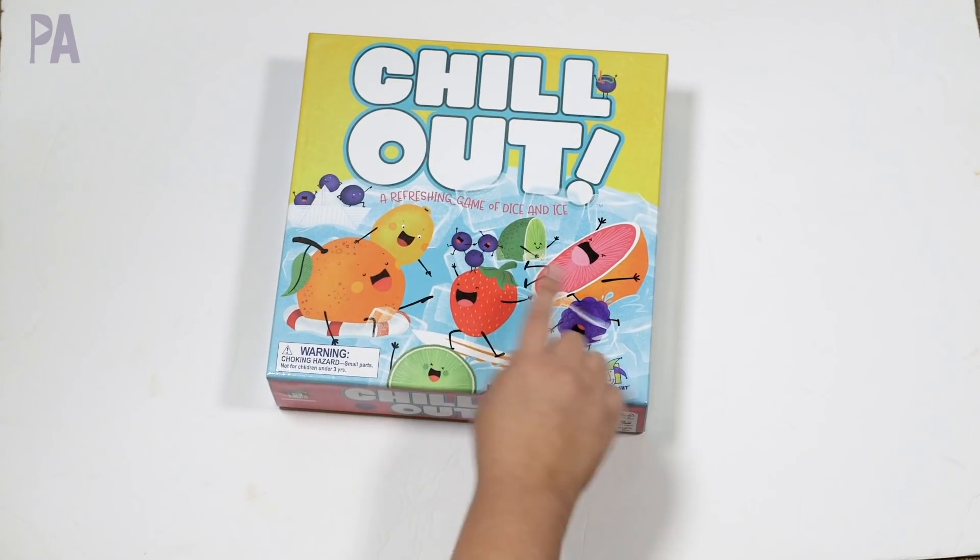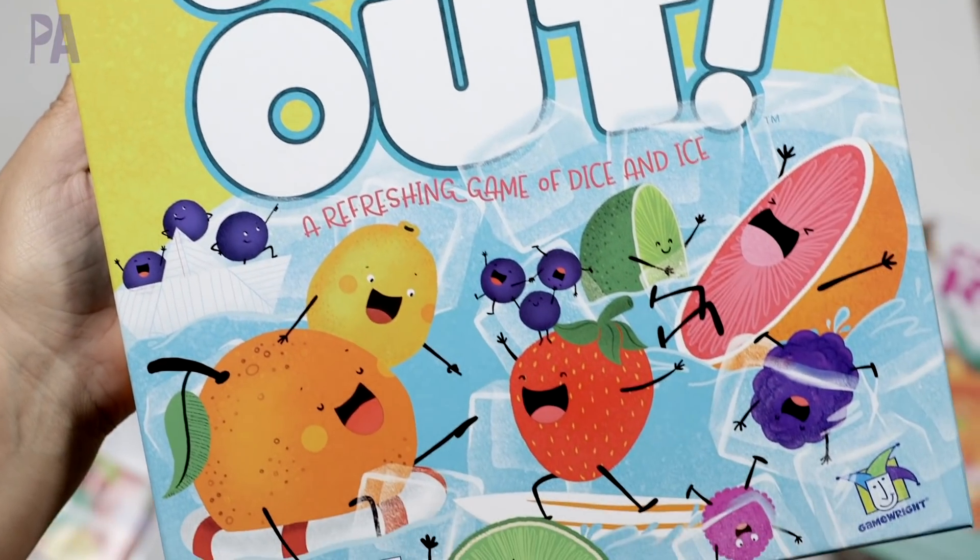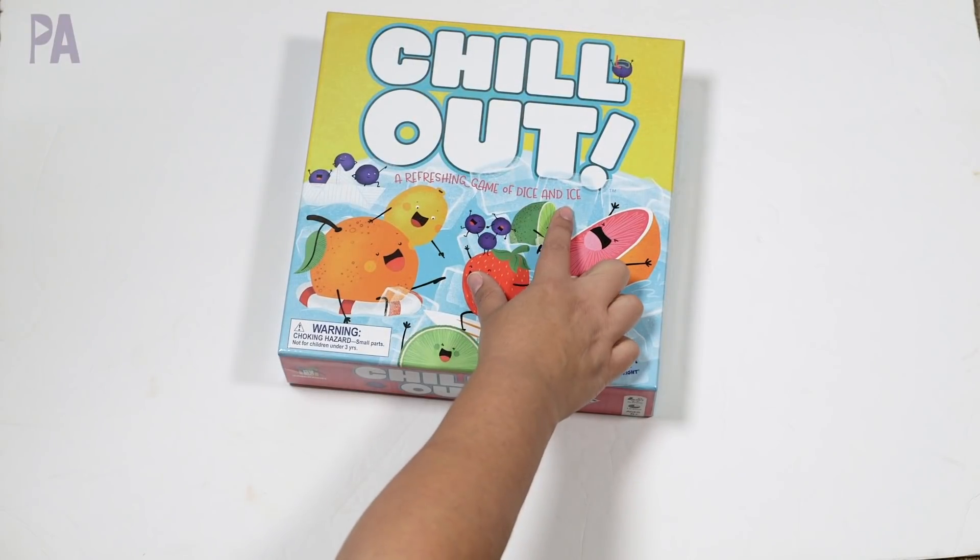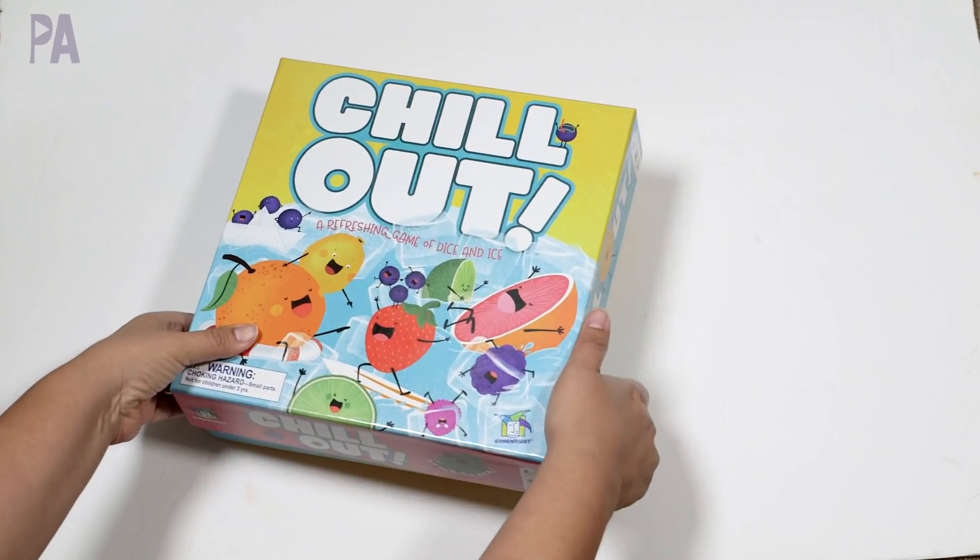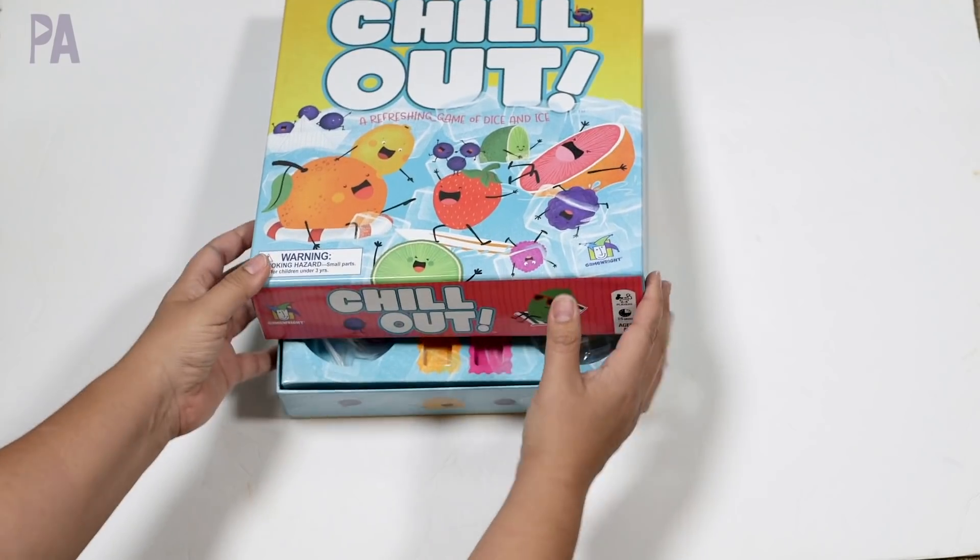Game Right sent me some games to check out. And the reason why I wanted to put these in the video is because they do involve dice too. This one's called Chill Out. It says it's a refreshing game of dice and ice for ages five and up. And it says the game is for two to four players. It only takes about 15 minutes to play, which I think is great for that age level. Packaging is always so cute, you guys.